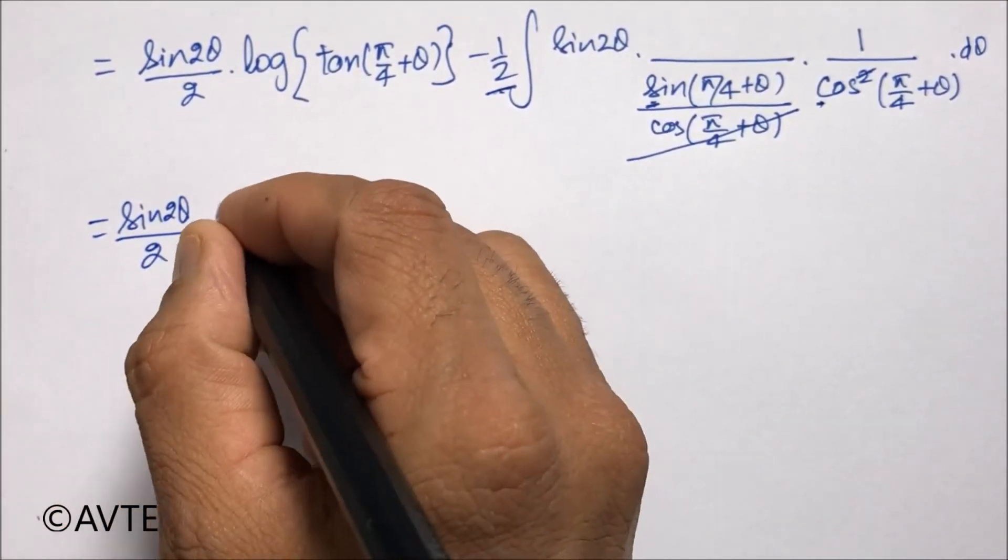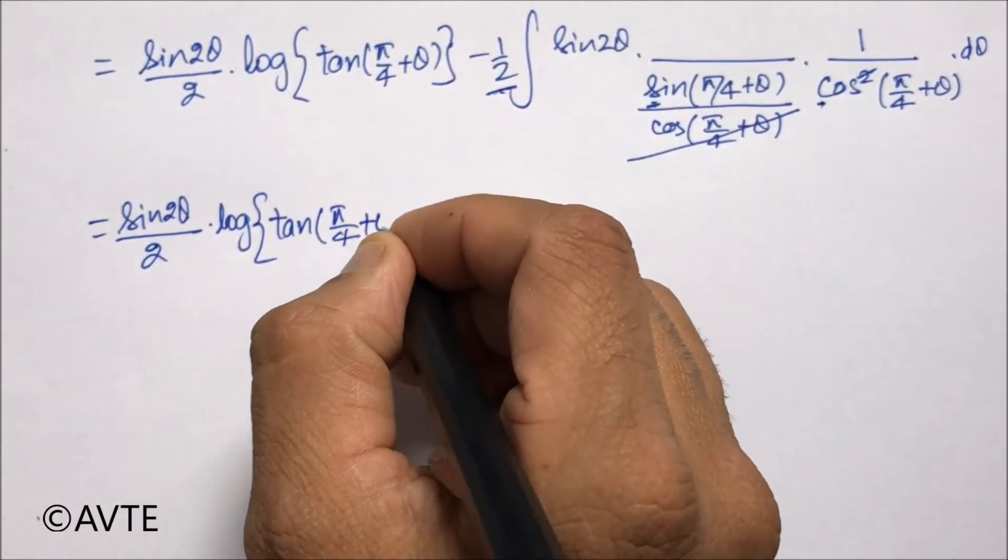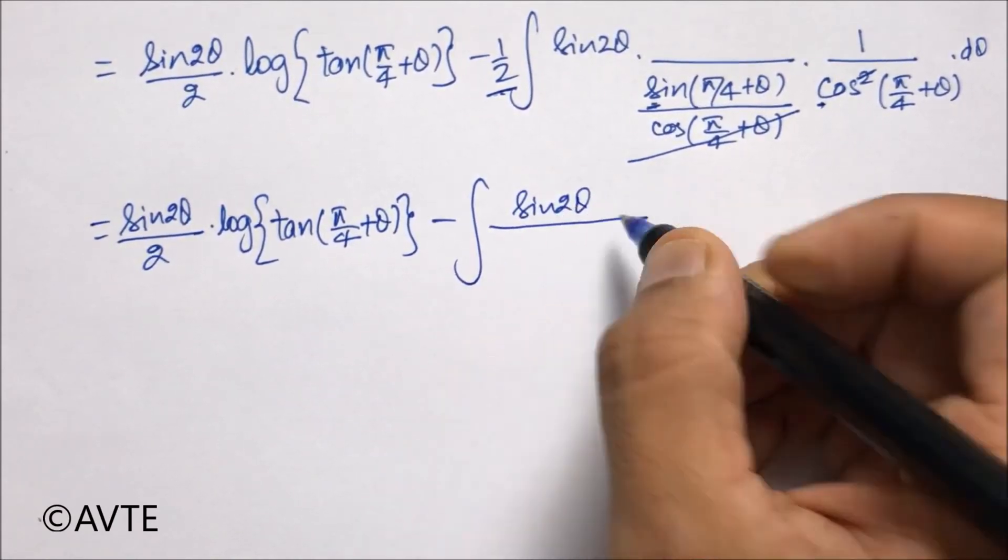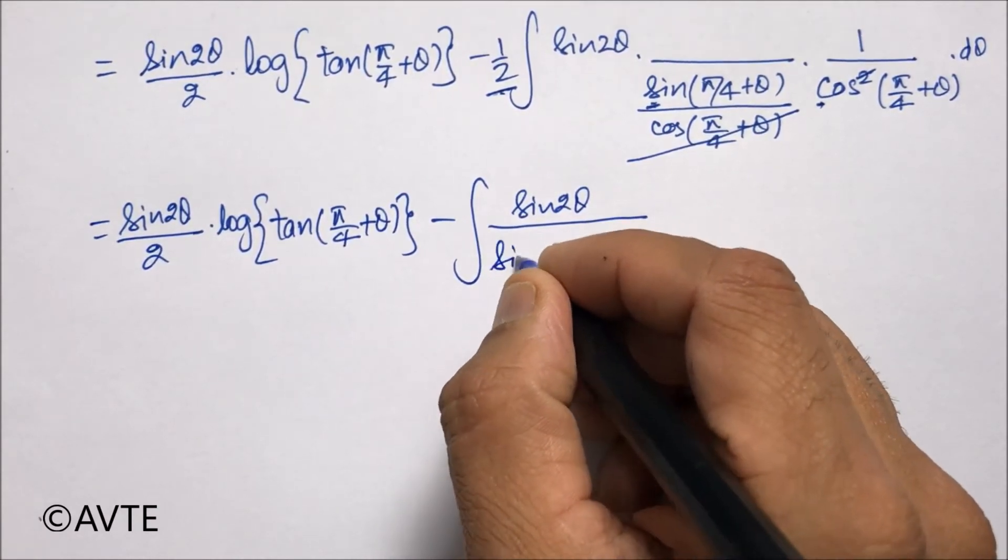So we are writing the first part as it is just for the sake of it. And now this 2 sin θ cos θ will turn to sin 2θ.